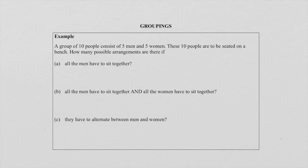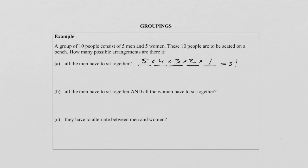The first part is that all the men have to sit together. Please note the females don't need to sit together — it's only the males. If we arrange the five males, we draw five lines. The five males can't repeat because these are people. So it is 5, 4, 3, 2, 1, and when we multiply, we get 5 factorial. That is just the males seated together — no female is allowed in between.